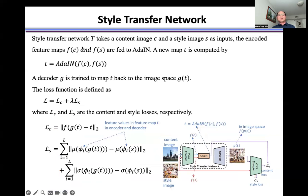Style transfer network T takes content image C and style image S as inputs. The encoded feature maps f(C) and f(S) are fed to the AdaIN layer.